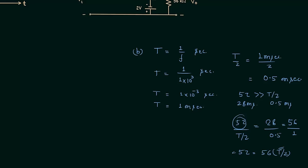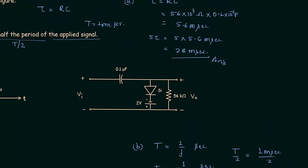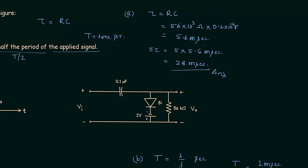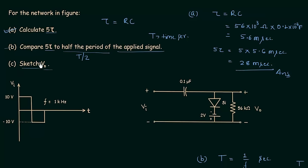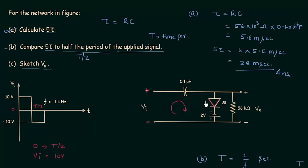I have already explained why we keep the discharging time very high. Now we move to Part C, where we need to sketch the output voltage Vo. In this circuit we have a 2 volt additional DC supply, so this is a biased clamper circuit. For the first half cycle from 0 to T by 2, the input voltage Vi equals 10 volts, which is positive. Current flows in the clockwise direction, and since the direction of current matches the diode arrow, the diode is forward biased. The diode is a silicon diode, as given in the problem.